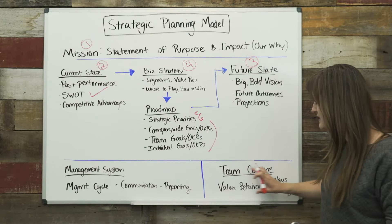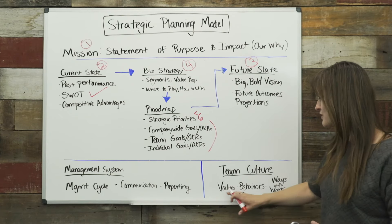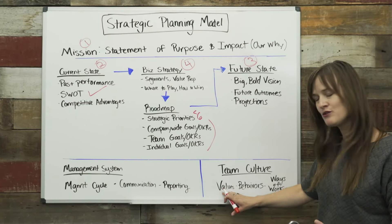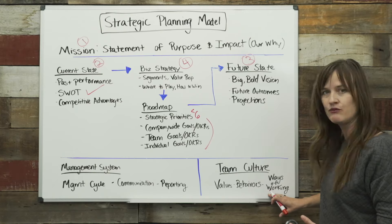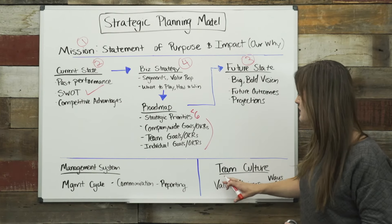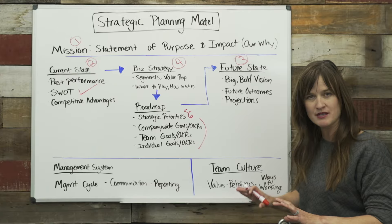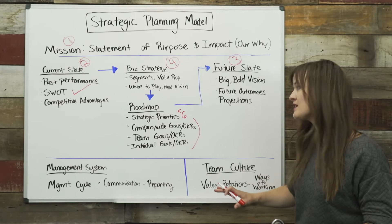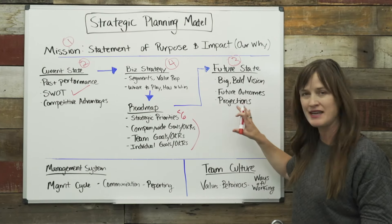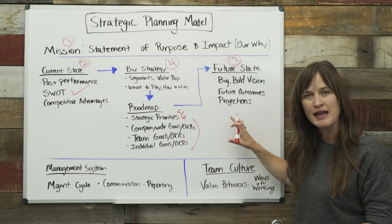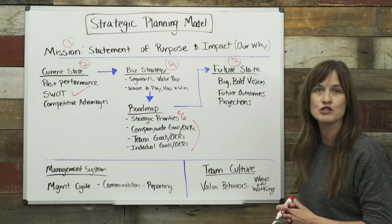Sitting next to it is your team culture. Your team culture is comprised of values, behaviors, and ways of working. It's technically not exactly part of a standard strategic planning process, but it's really important to making execution happen.